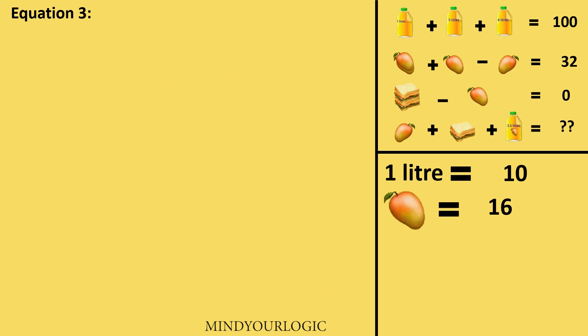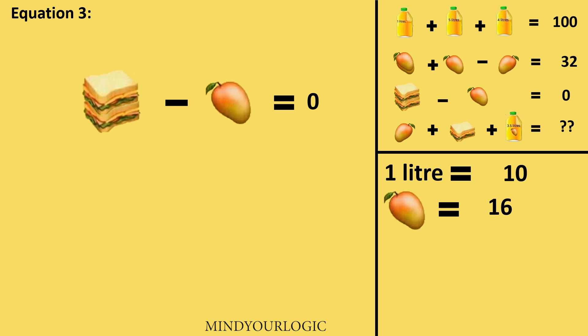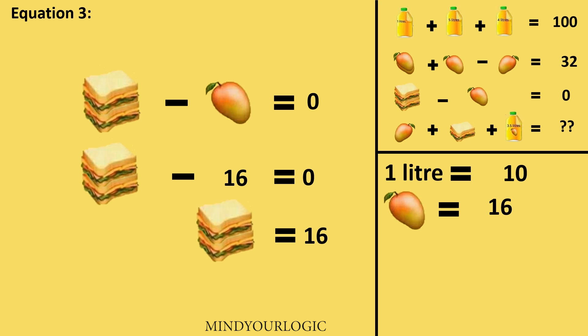In the third equation, I have 2 sandwiches minus a mango equal to 0. Mango is 16, so 2 sandwiches will be 16, and 1 sandwich will be equal to 8.